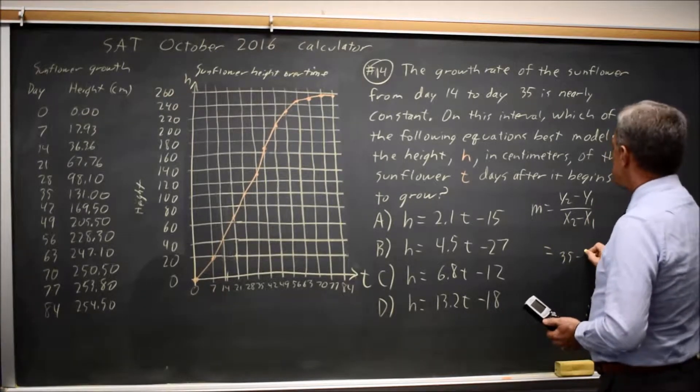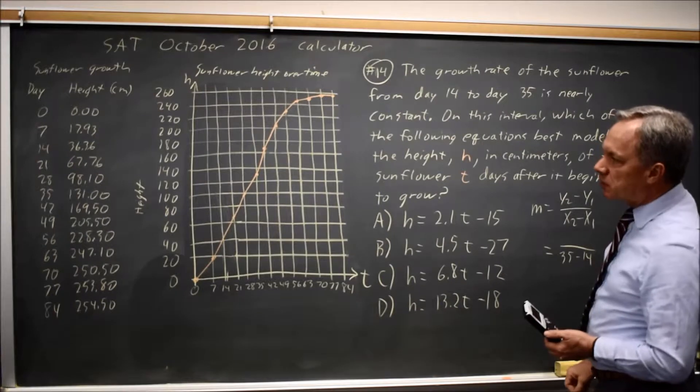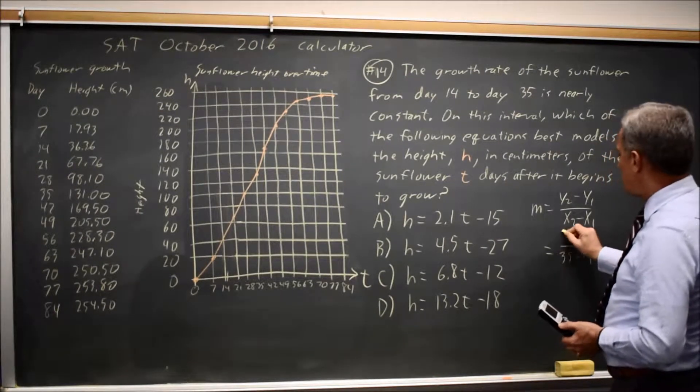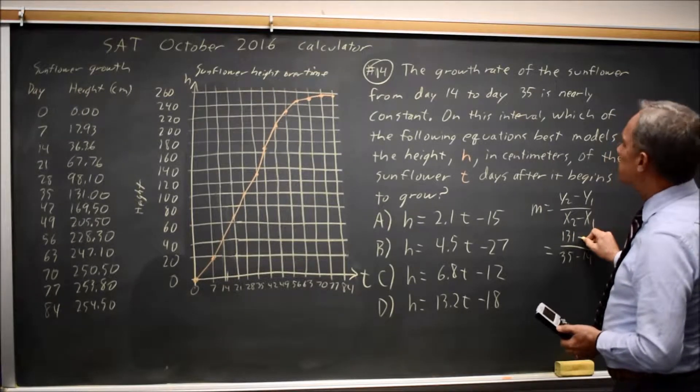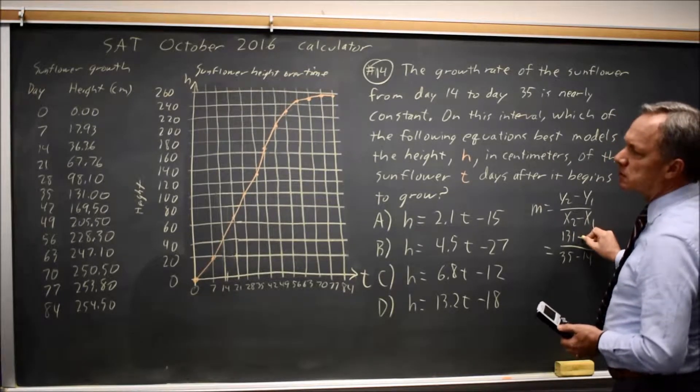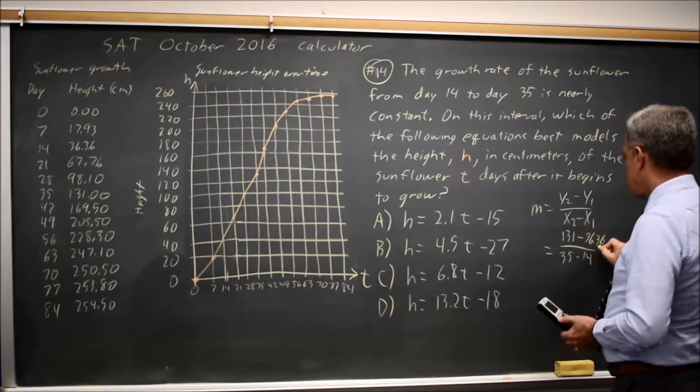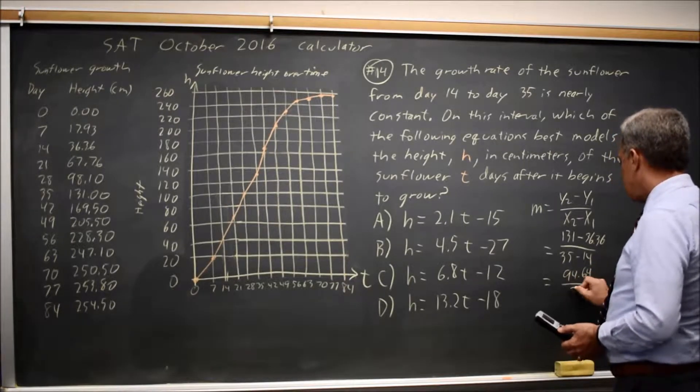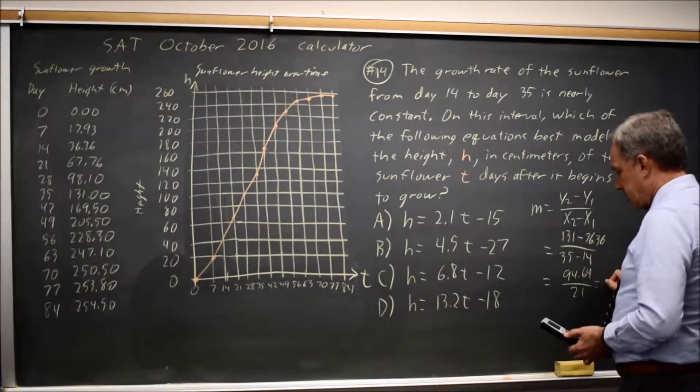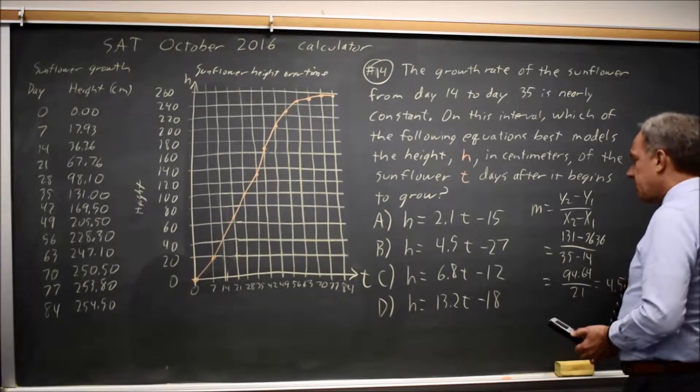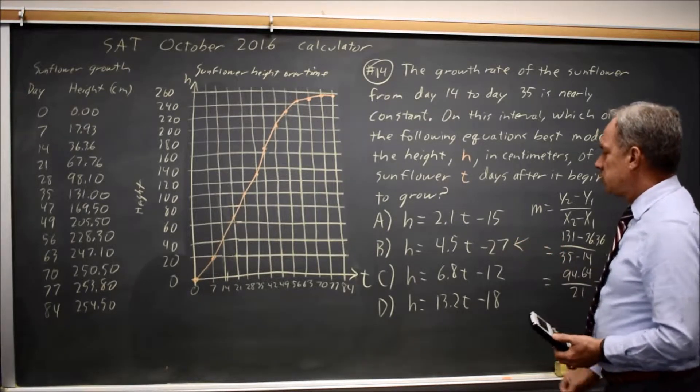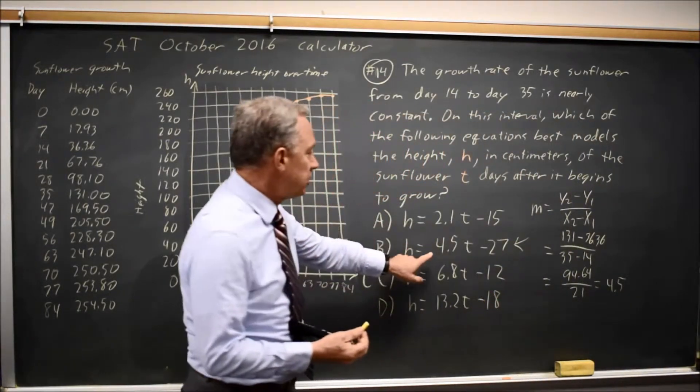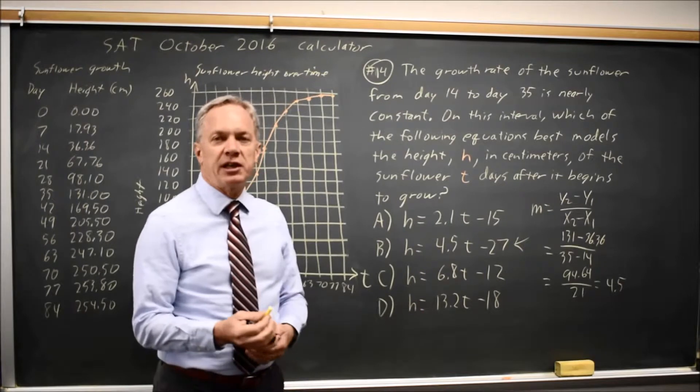Day 35 minus day 14 in the denominator, the change in height is from 131 to day 14 was 36.36, and that is 94.64 over 21, which is 4.5-ish, which is clearly equation B. These other three choices do not have a slope anywhere near 4.5, so B has to be the correct answer.